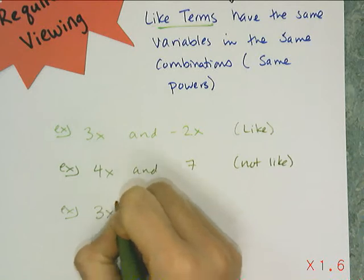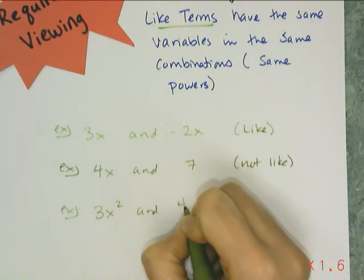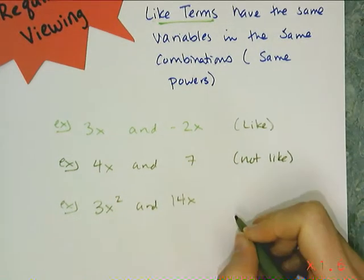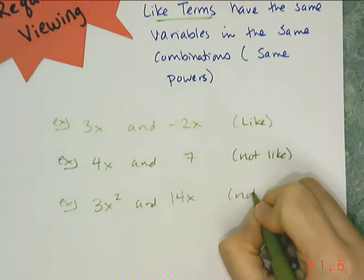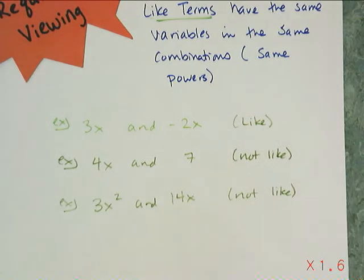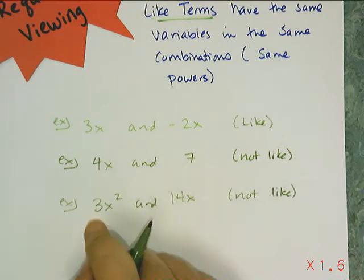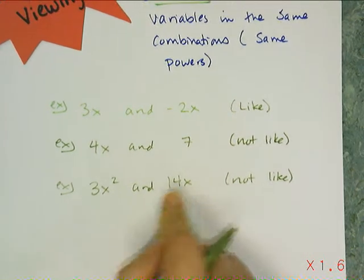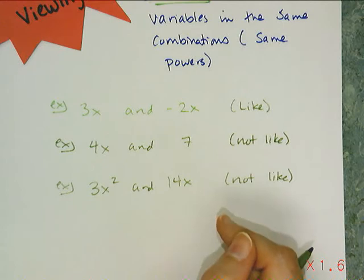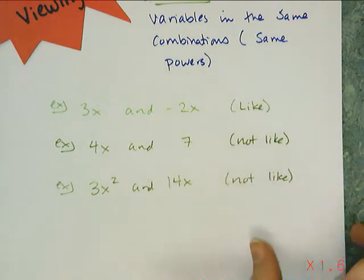Same thing with 3x squared and 14x. These are not like terms. Yes, they have the same variables but they're not in the same combination because this is an x squared and this is an x. Squares do not add together with x. So if I had 3x squared and 14x added together it would stay 3x squared plus 14x.